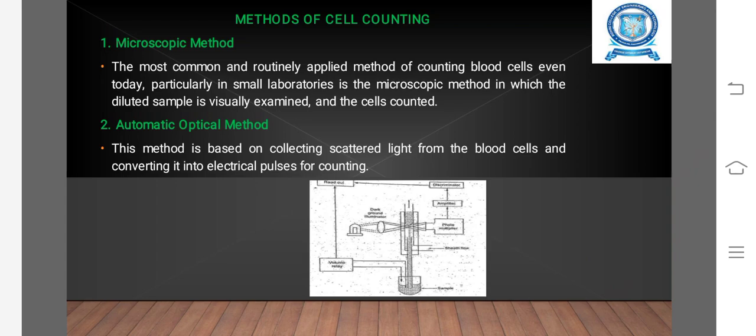Automatic optical method: This method is based on collecting scattered light from the blood cells and converting it into electrical pulses for counting.